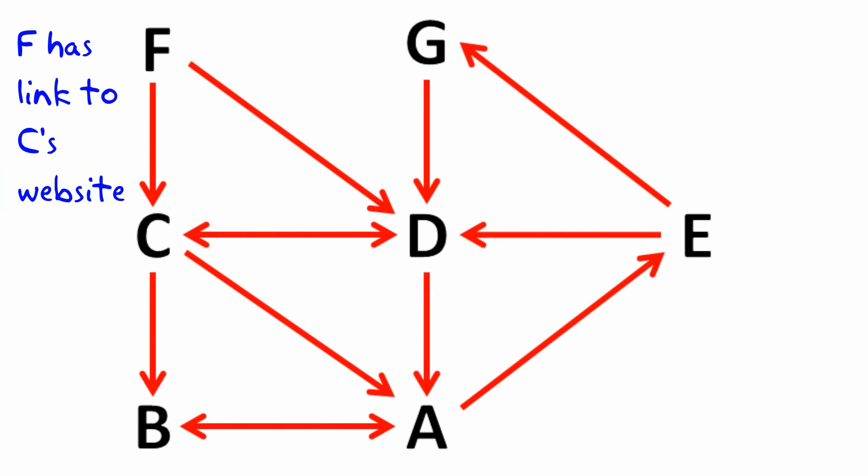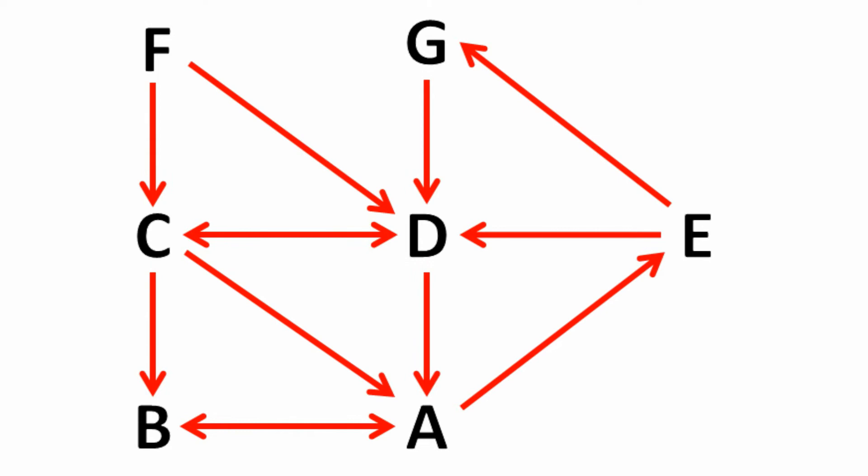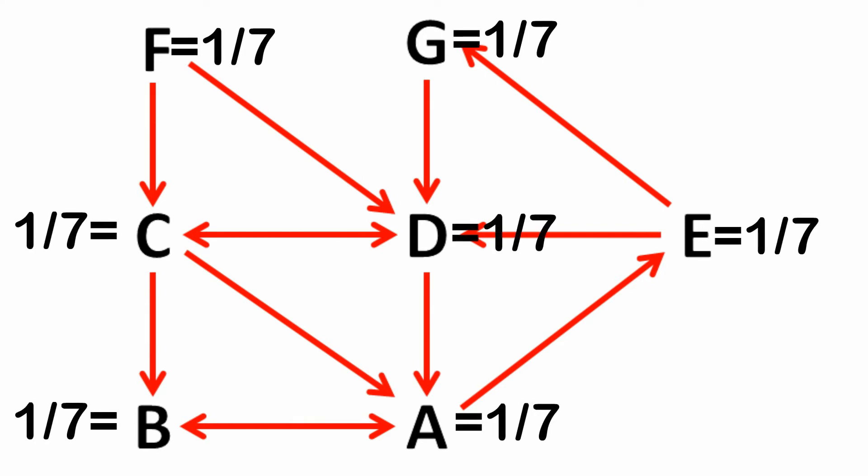Okay, let's start by using the three principles to work out the importance ranking of A. But hold on—A's importance depends on B, C, and D, and we don't know the importance of these websites. So as it stands, we can't apply the principles to A. In fact, we can't apply them to any website. The solution is to initially assume that all websites are equally important. There are seven sites, so we assume that each has an importance ranking of one-seventh, about 14.3 percent. Now we perform a number of iterations using the three principles, and this will get us to a workable solution.